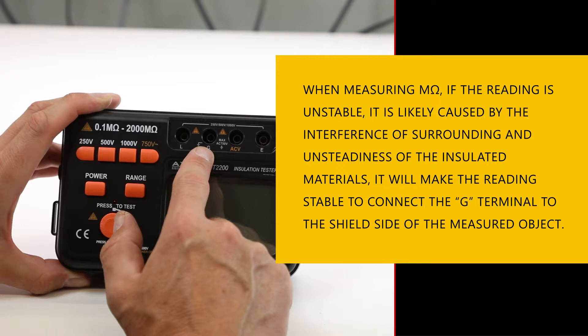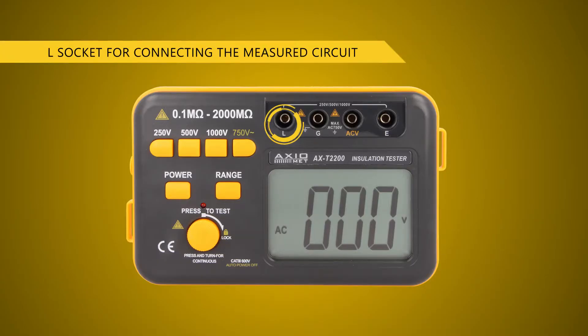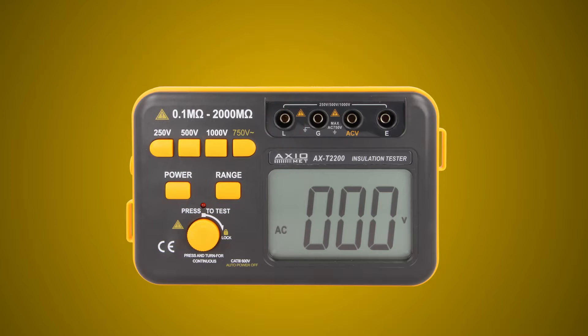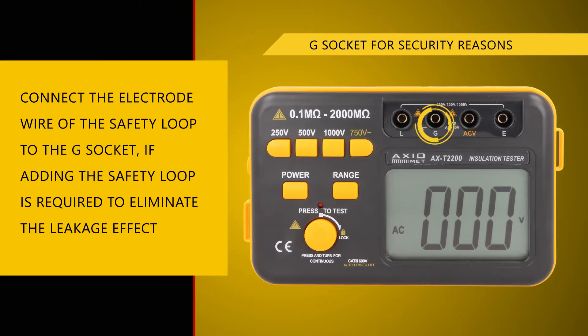The ohmmeter is equipped with four sockets. They help to perform three-phase measurements which are needed in the case of big devices. It helps to eliminate influence of surface leakage current on the result.